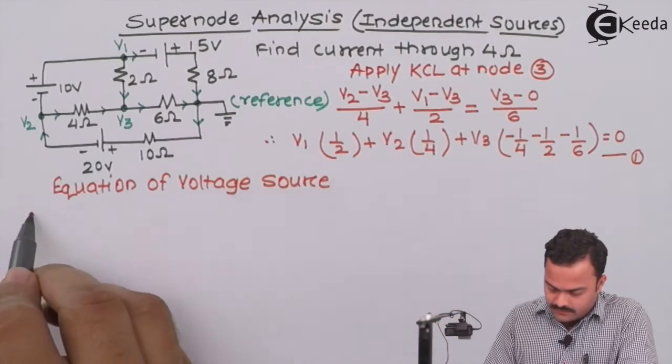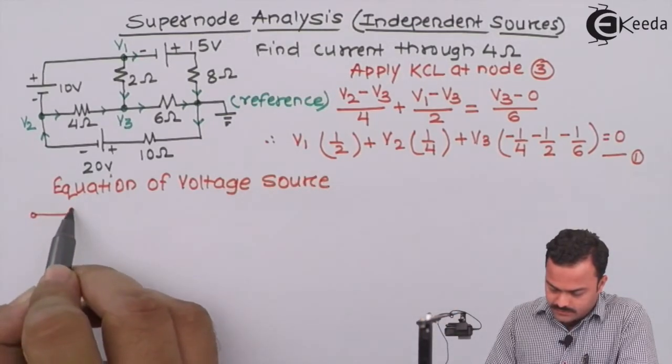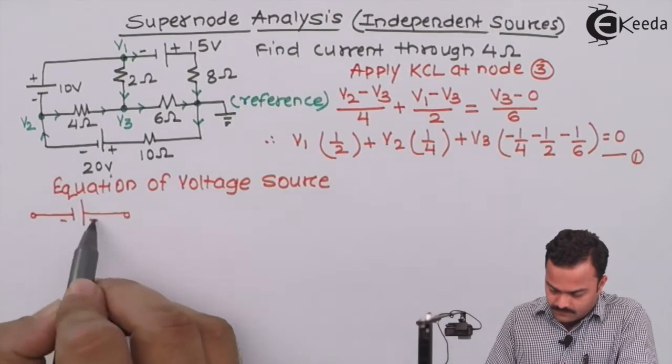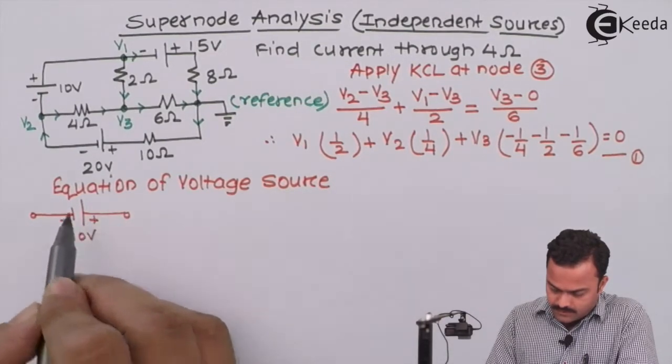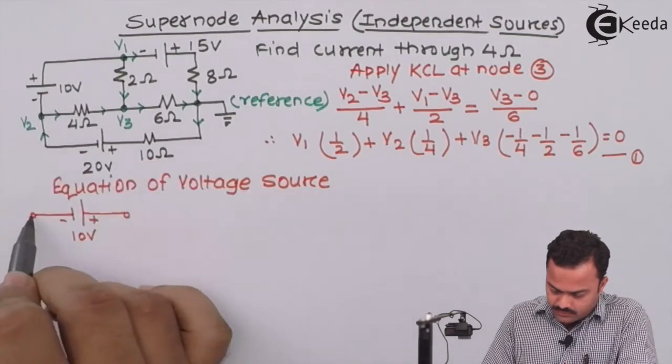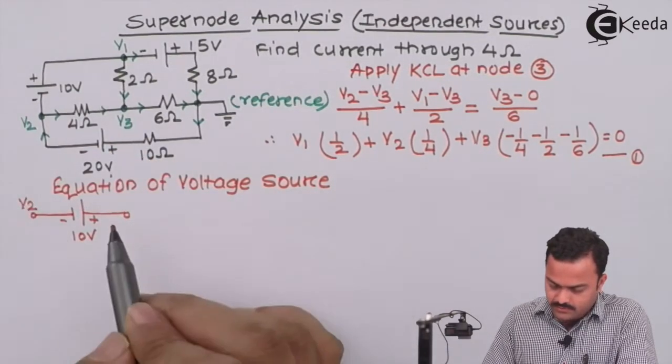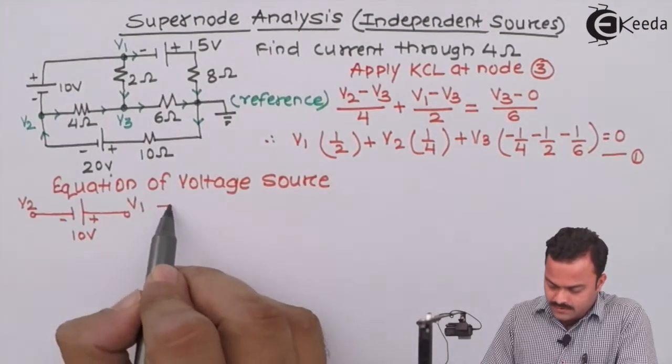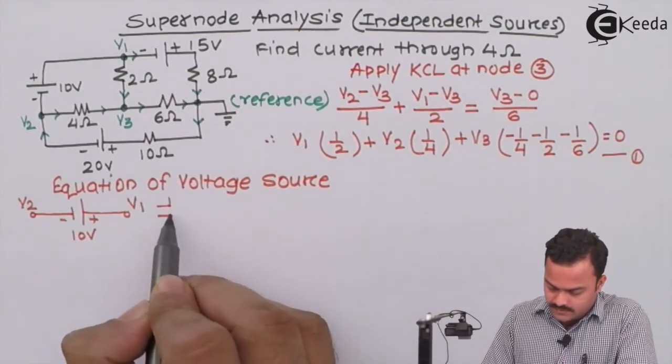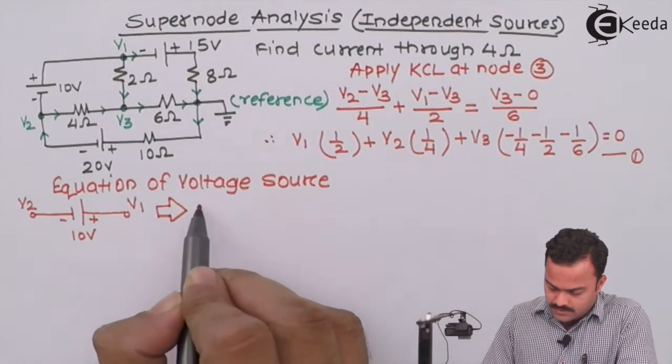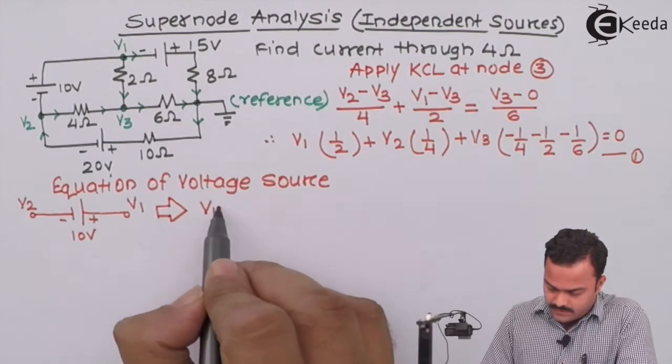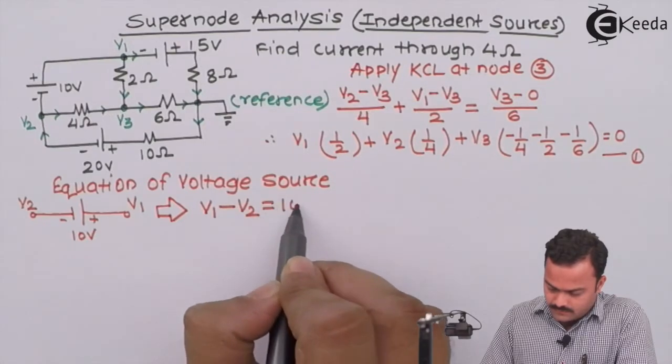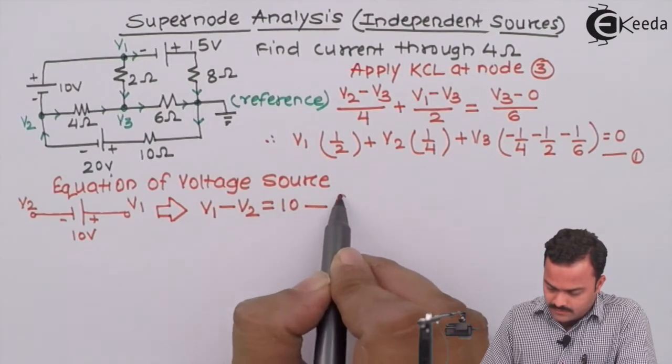So I will take out this voltage source out of the circuit. Negative is connected to the second node and positive to the first node. So this implies a simple equation as V1 minus V2 equal to 10, as equation number 2.